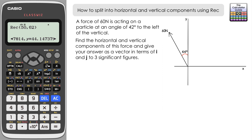Let's move on to a third example, which is slightly different, so we need to be careful. We have a force of 60 newtons acting on a particle at an angle of 42 degrees to the left of the vertical. In the diagram you can see 44 degrees against the y-axis, so the angle is in a different position from the first two questions. We still need to find the horizontal and vertical components and give this as a vector in terms of i and j.